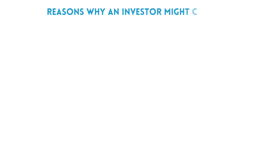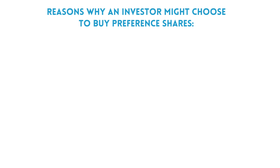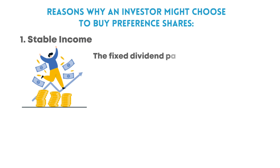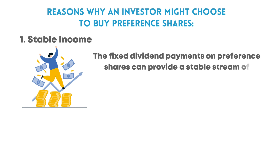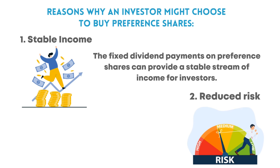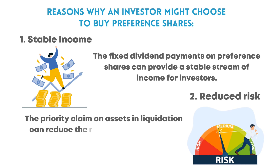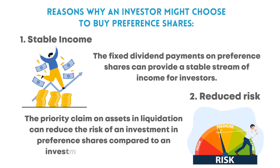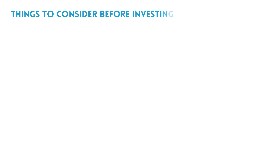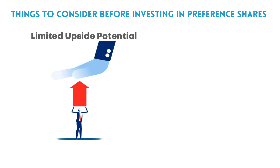Here are some reasons why an investor might choose preference shares. First, stable income: the fixed dividend payments can provide a stable stream of income. Second, reduced risk: the priority claim on assets in liquidation reduces risk compared to common shares. However, there are considerations: limited upside potential — fixed dividend payments may not keep pace with inflation, and the price may not appreciate as much as common shares if the company grows.